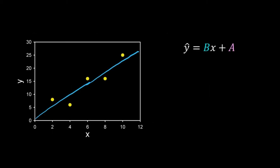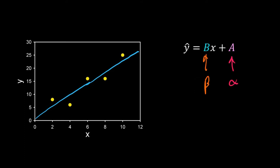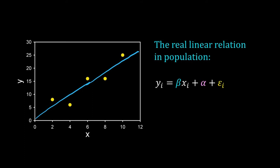Now get back to the problem of regression. We had five data points and we fitted the data to the equation y-hat equal to bx plus a. We obtained the numerical values of b and a — I am using y-hat just to differentiate this y from the y in the data. But these values of a and b are based just on a sample, just five data points. I assume that the real values of b and a in the population are beta and alpha — I don't know them. So the real linear relation between y and x is: yi = beta·xi + alpha + eta_i.